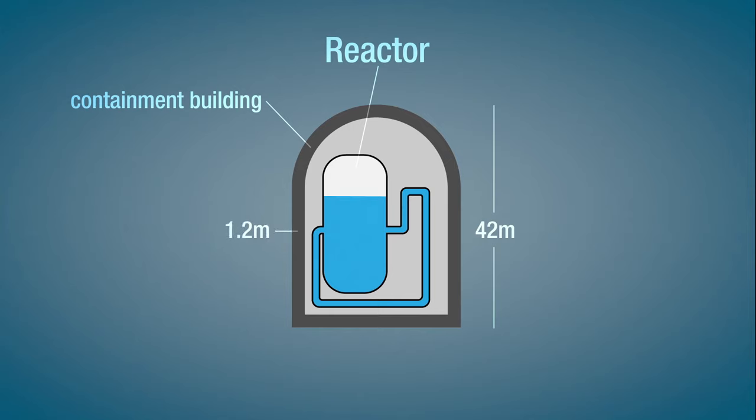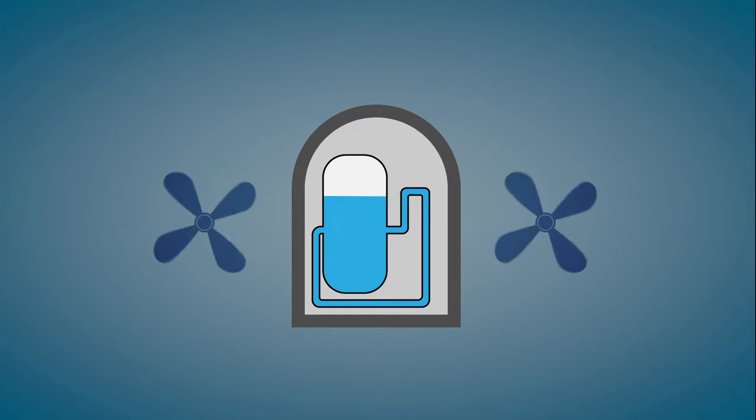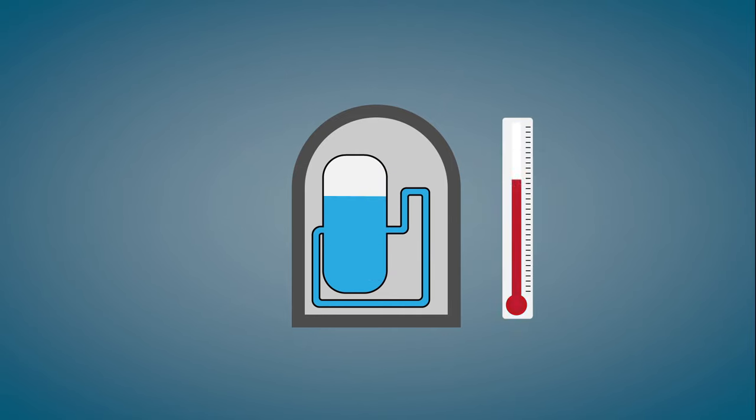The containment system consists of the structure itself, an automated water dousing system, building coolers, two air locks and a filtered air discharge system. All designed to internalize any radiation and cool the reactor in case of problems.